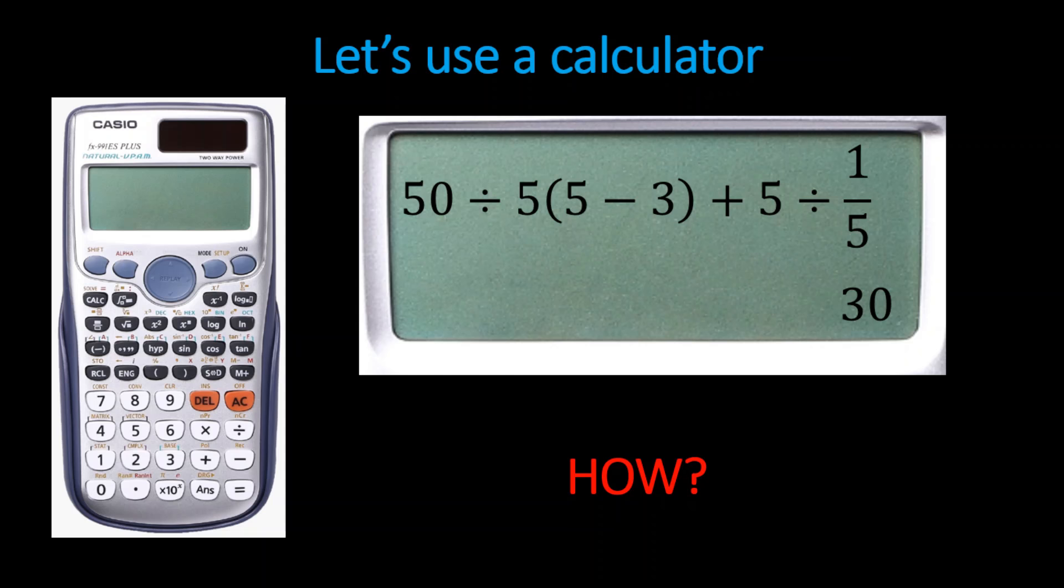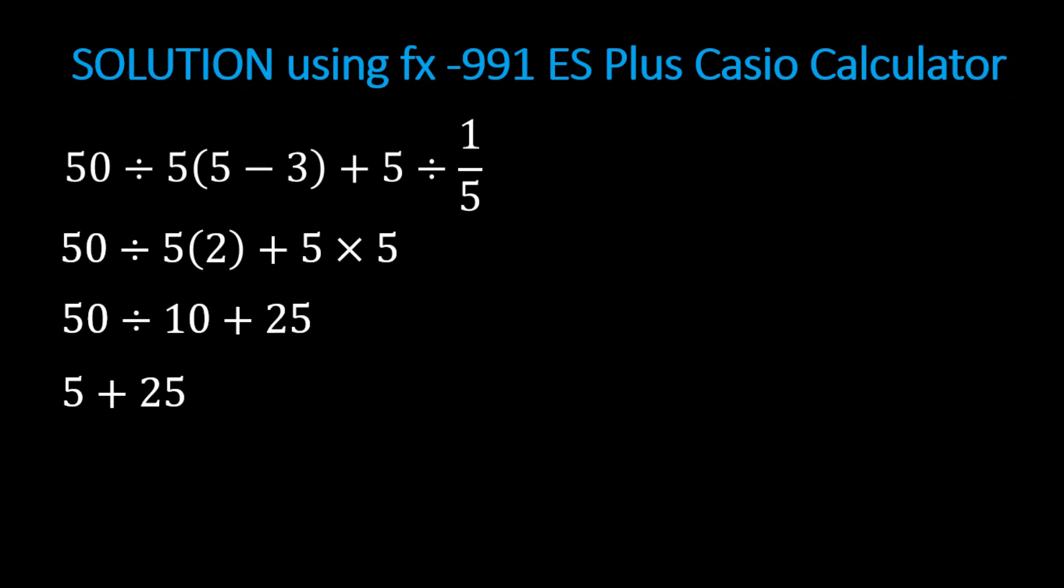Let's check the calculator's order of precedence. First it subtracts the numbers inside the parenthesis, then 5 times the reciprocal of 1 fifth is 5, then it multiplies 5 times 2 which equals 10, plus 5 times 5 which equals 25. Now 50 divided by 10 is 5 plus 25. The calculator got 30.